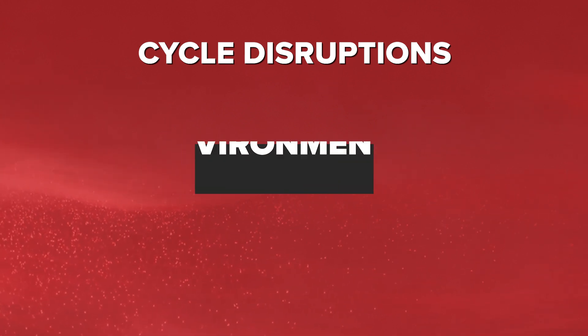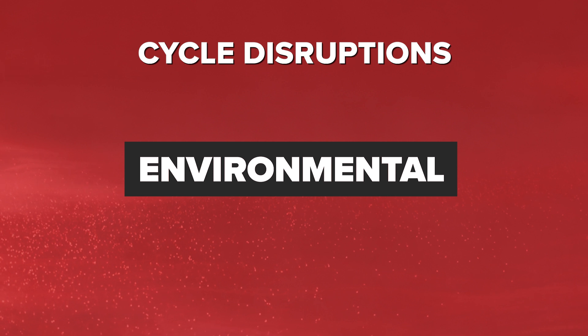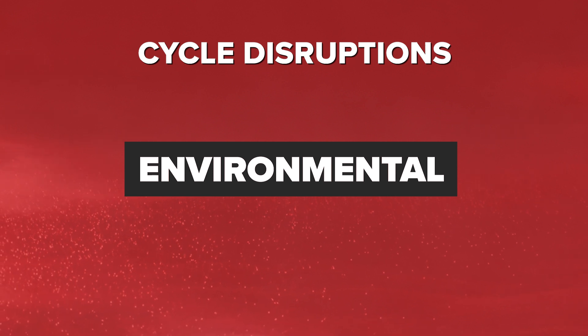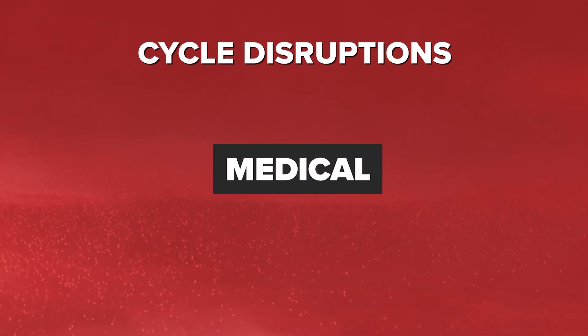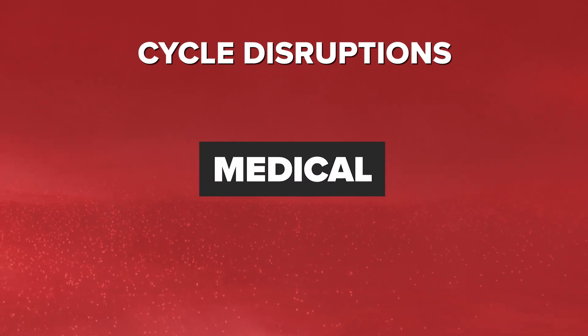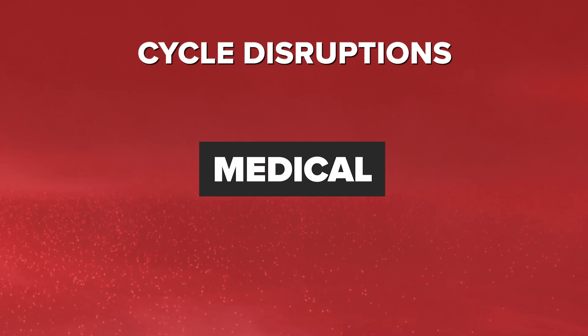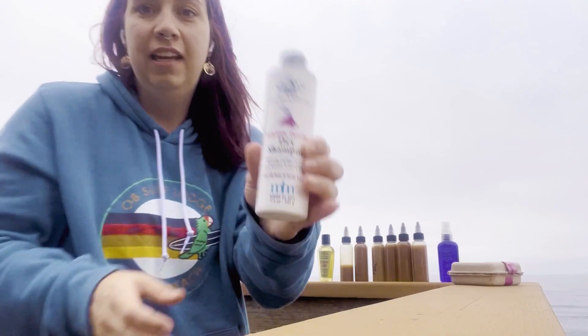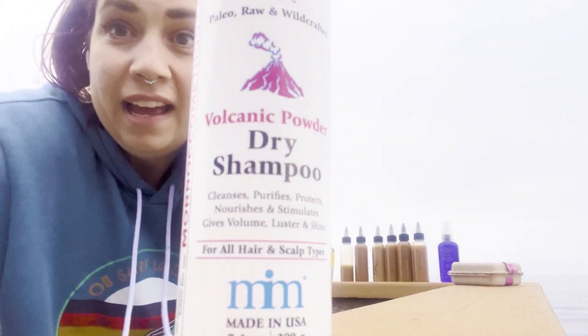Environmental factors such as pollution and harsh chemicals in hair products can also affect the hair growth cycle. Certain medical conditions, medications, and genetics can contribute to hair loss and disrupt the hair growth cycle. Remember, understanding your hair's natural cycle and taking care of your overall health can go a long way in promoting healthy hair growth.